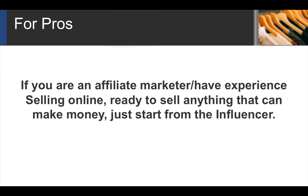If you're an experienced affiliate marketer ready to sell anything that makes money, just start from the influencer directly — look for influencers in the niche you want to focus on, like going straight to Snapchat for skin art or YouTube for gardening. But that's only if you're a pro with experience selling stuff. If not, follow these steps and after you make money the first, second, and third time, then you can start with the influencer first.